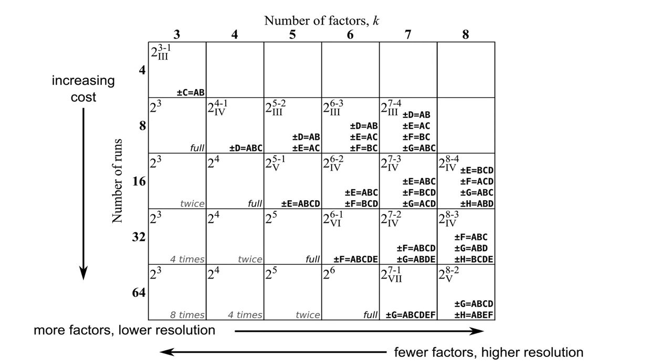So in fact, this is a quarter fraction. It is 2 to the power of 5 minus 2. Notice that all entries in the table have this general format: 2 to the power of k minus p. The k is the number of factors. The p refers to the reduction in work.